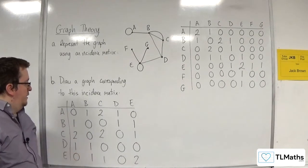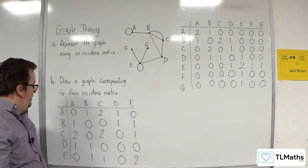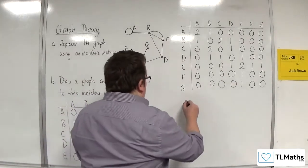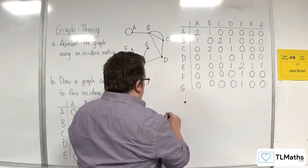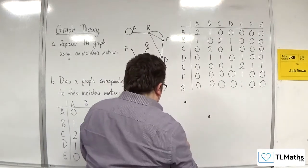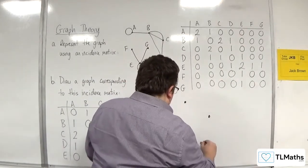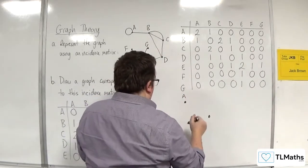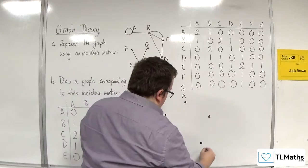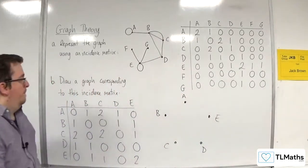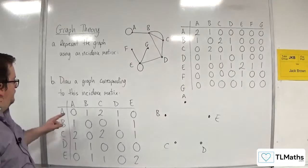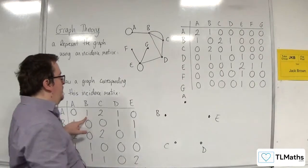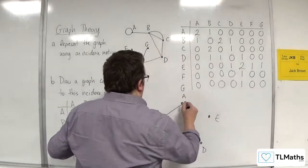Now let's take a look at this one. We've got A, B, C, D, and E, and I need to draw the graph that accompanies it. So A, B, C, D, and E. Let's run through this.